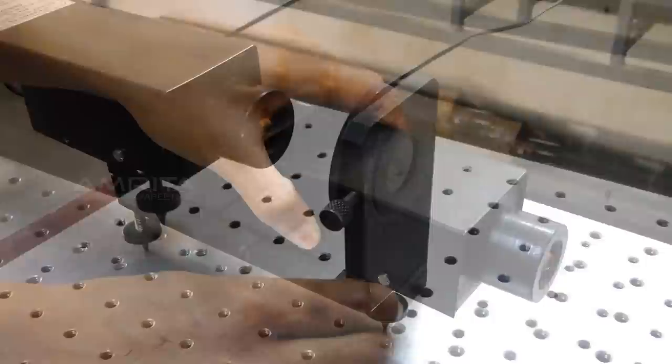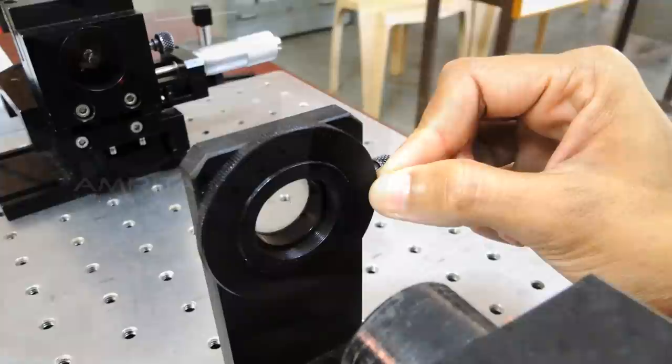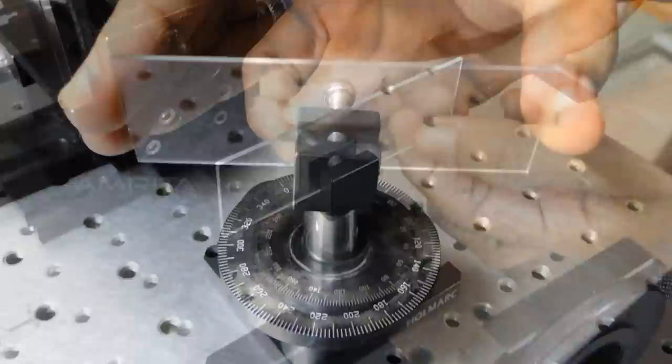Procedure: Mount Diode Laser to the Laser Mount. Switch on the laser and place a polarizer rotator in front of it so as to make the E-fields parallel to the breadboard.